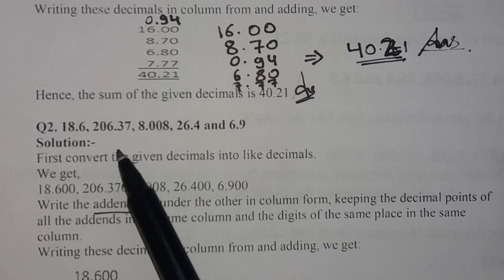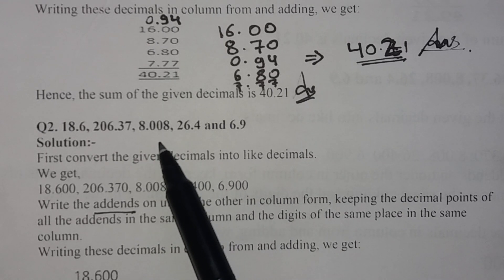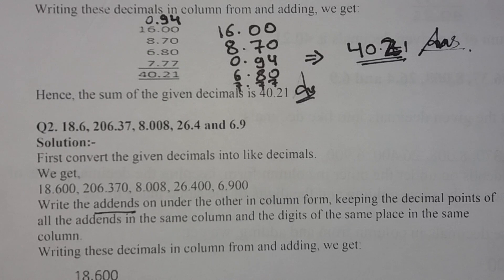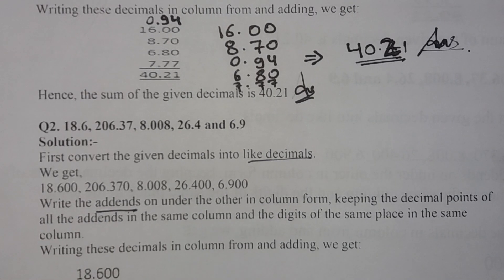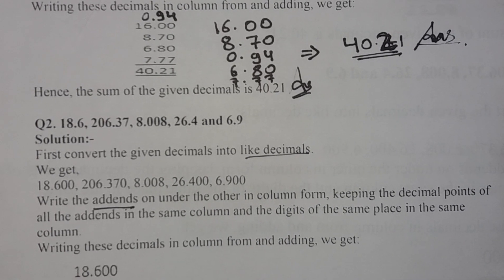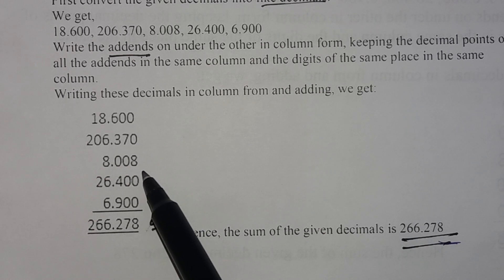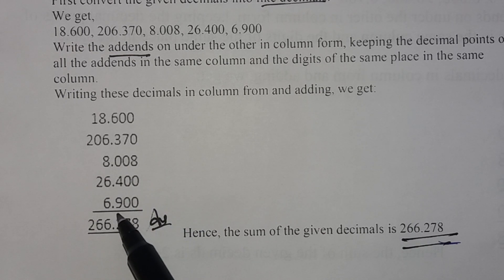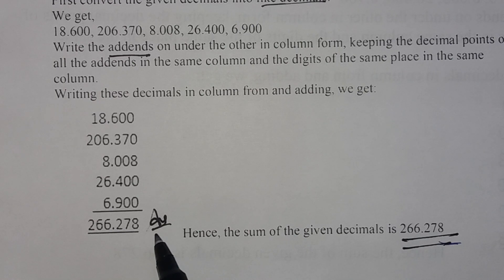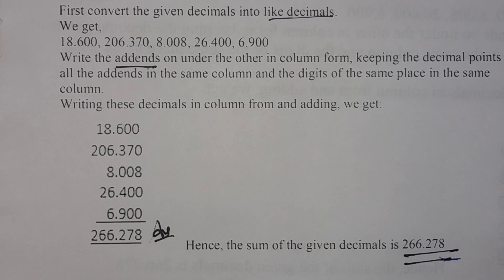In question number two, we have been given 18.6, 206.37, 8.008, 26.4, and 6.9. We will convert them into like decimals: 18.600, 206.370, 8.008, 26.400, and 6.900. We arrange them in column form: 18.600, 206.370, 8.008, 26.400, 6.900. When we add all these numbers, the answer will be 266.278.